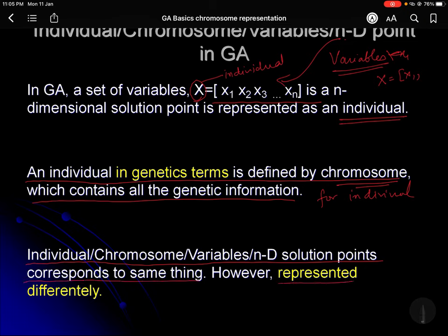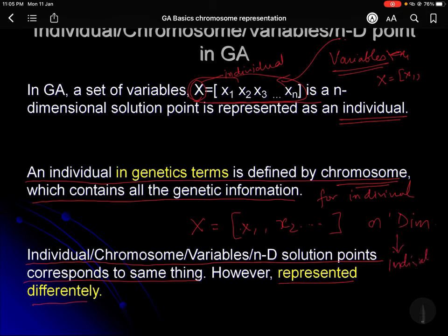However, they are represented differently. A variable N-dimensional point or individual is represented as a point x — an N-dimensional point. These are possibly a decimal set of numbers: x1, x2, and so on. This is an N-dimensional point, also called an individual, which is defined by a set of variables. A chromosome is also an individual, but only the representation is different.